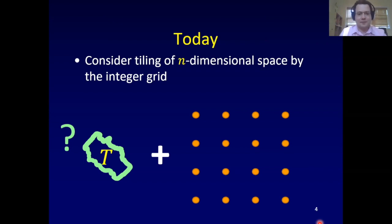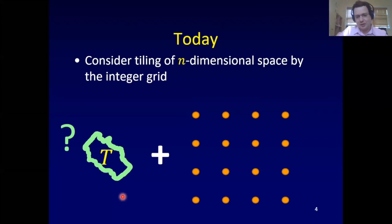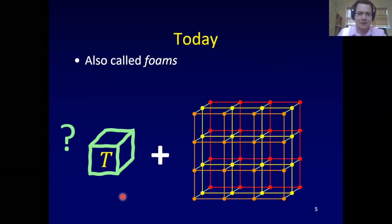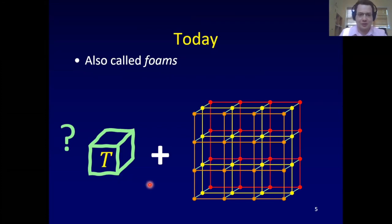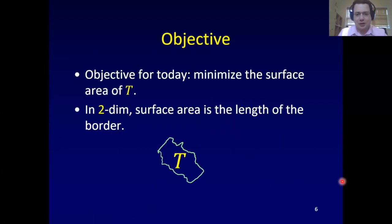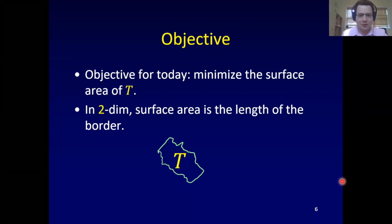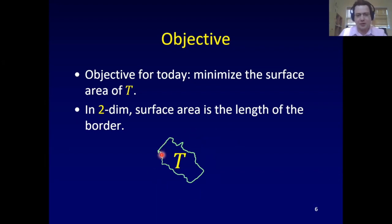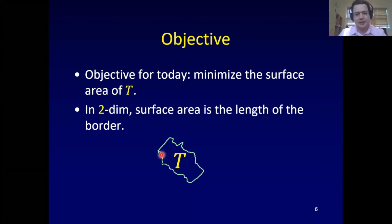We want a shape that tiles the space with an integer grid — we shift it one to the right, one up, one to the right and two up, and so on, and this fills the space. Such tilings are sometimes called foams. The objective today is to find the foam that minimizes the surface area of the tile. In two dimensions, this means minimizing the perimeter of the shape.